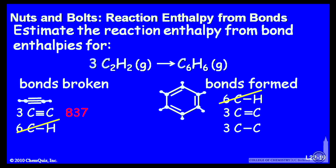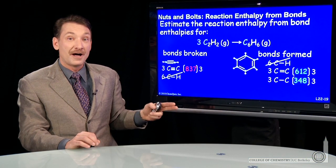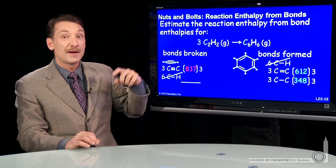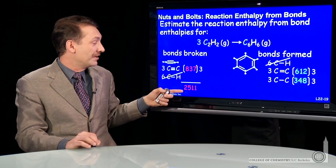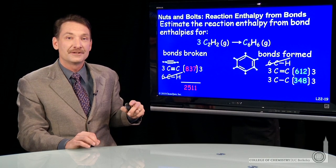My bond energies: the carbon-carbon triple bond is 837 kJ/mol, and I have three moles of those. The carbon-carbon double bond is 612 kJ/mol — three moles — and the single bond is 348 kJ/mol — three moles. I have to break all these bonds, which is an endothermic step. The total energy I have to put in is 2,511 kJ.